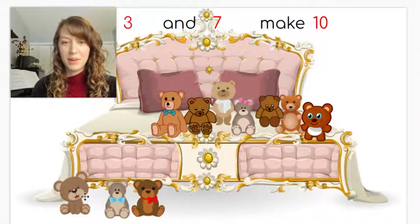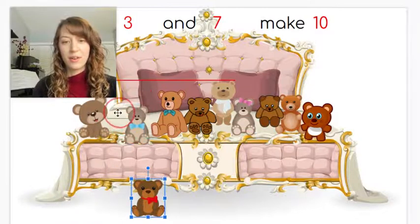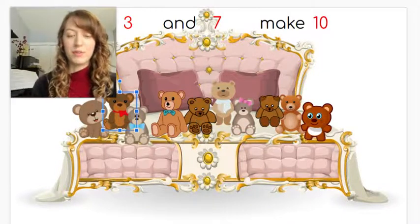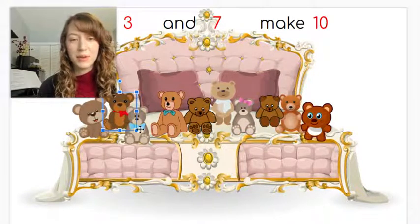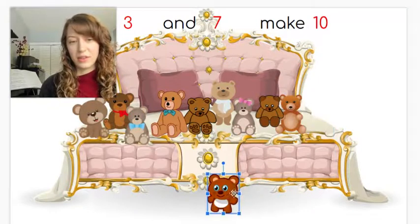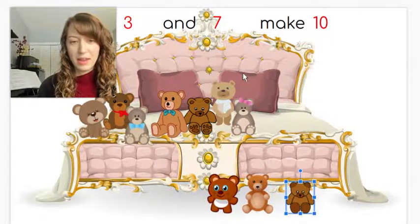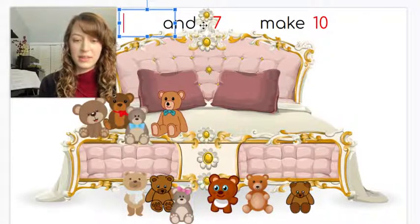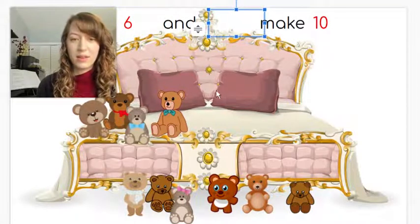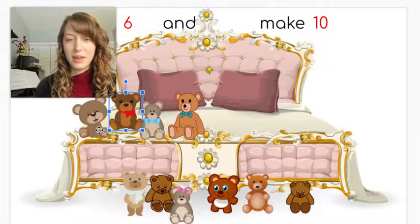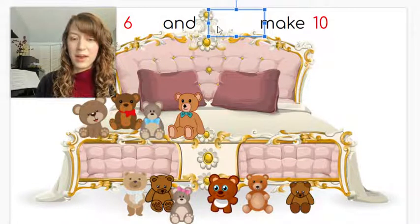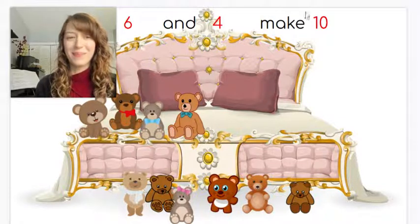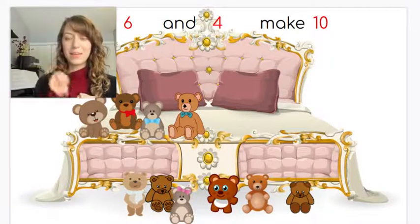You can play around with this and put any amount you want on the floor and on the bed to show different ways to make ten. This time let's put six on the floor: one, two, three, four, five, six. So I have six on the floor, and how many are left on the bed? One, two, three, four. Six on the floor and four on the bed make ten. So six and four make ten.